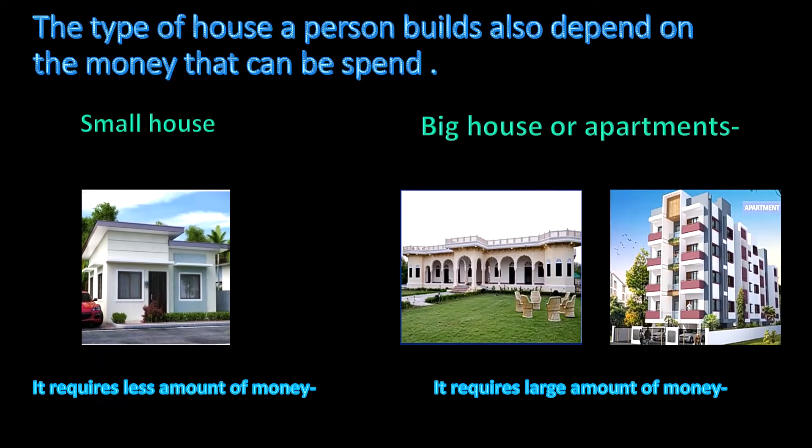According to the budget, houses are divided into two types: small houses and big houses. Small houses require less amount of money while big houses require a large amount of money. In big cities where space is very less, people build multi-story buildings. There are many flats or houses in a single big building where many families can stay together and save place and money.